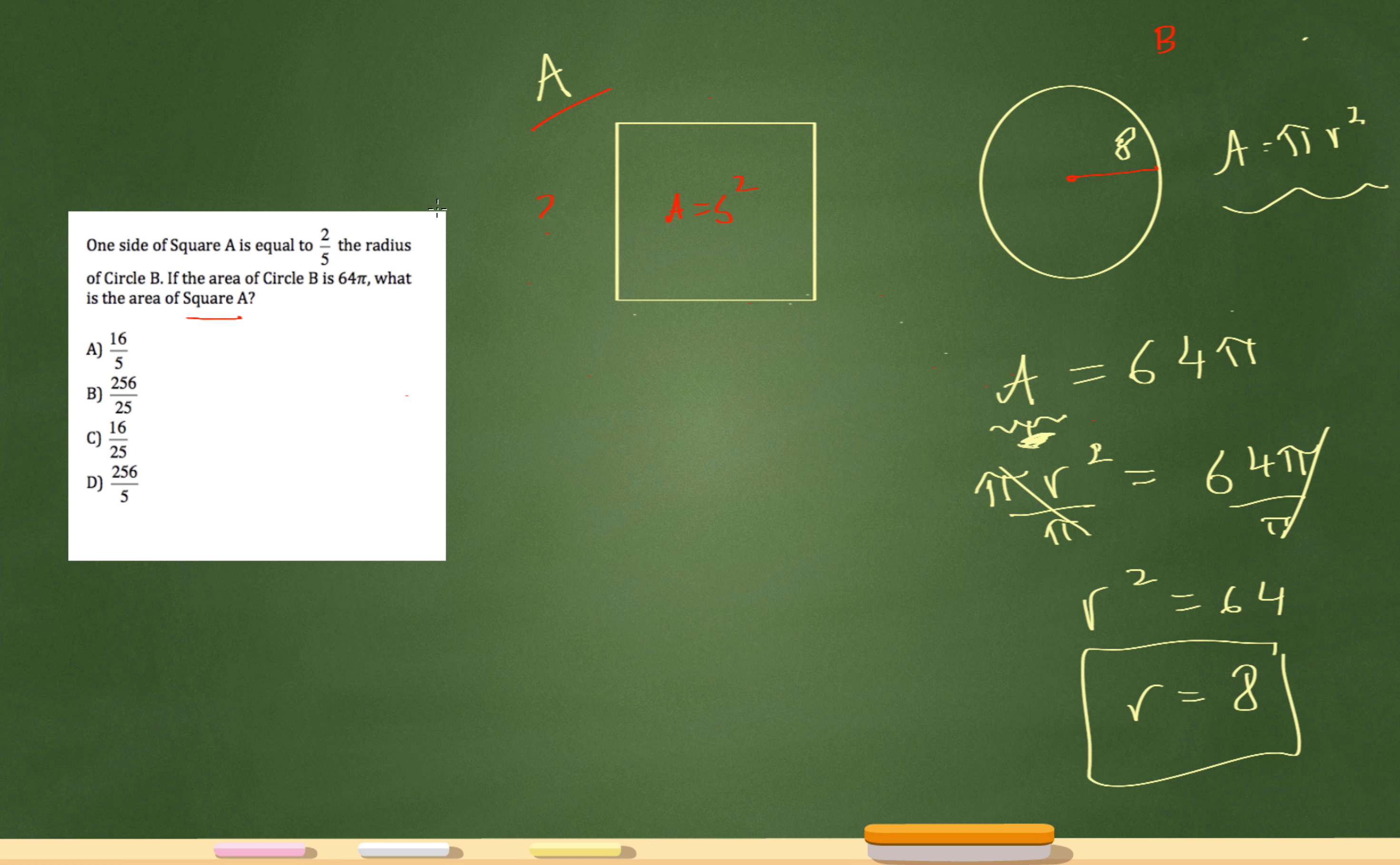Let's go back to what the question was saying one more time. The question was saying one side of a square is equal to two-fifths the radius of circle B. So now I know the radius of circle B is 8. So the length of this side will be two-fifths of 8, which is just two-fifths times 8. 8 times 2 is 16. 16 over 5. And I'll just leave it at 16 over 5 for now. So I know that the length of one of the sides of the square is 16 over 5.